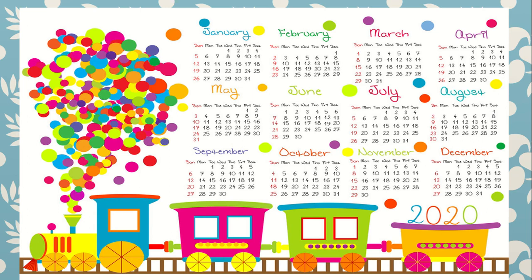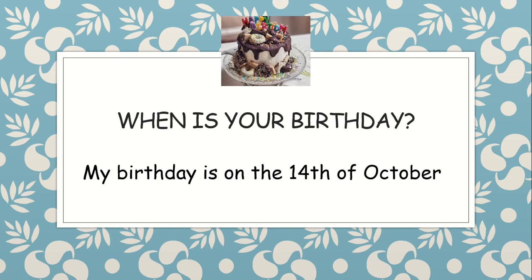So, if I ask you, when is your birthday? Think about it. In my case, my birthday — I'm going to say my birthday is on the 14th of October. Did you find it? My birthday is on the 14th of October. I said the 14th, okay? Ordinal number. When is your birthday? Think about it. I'm going to ask you later.